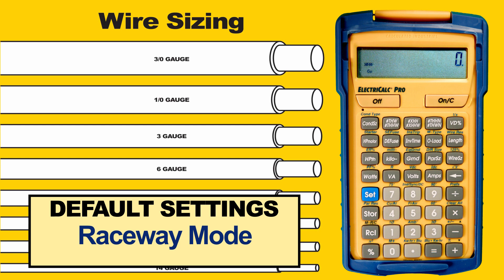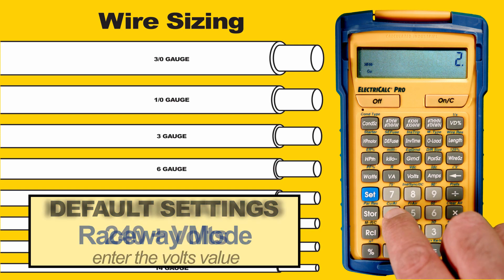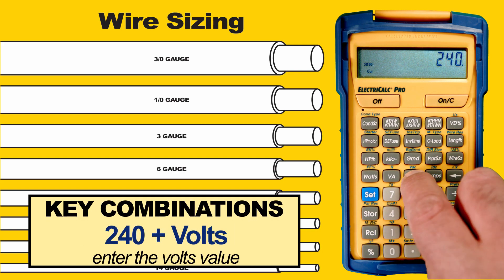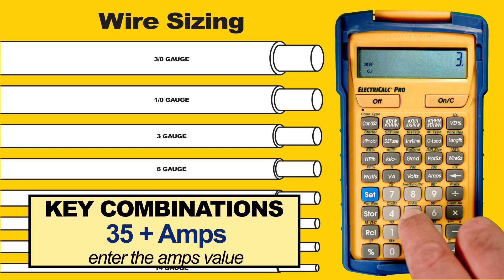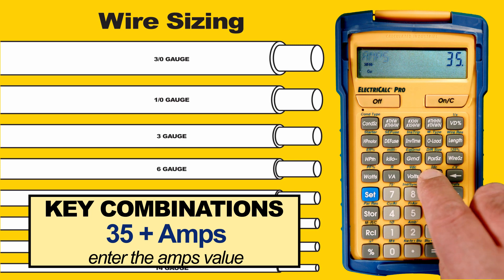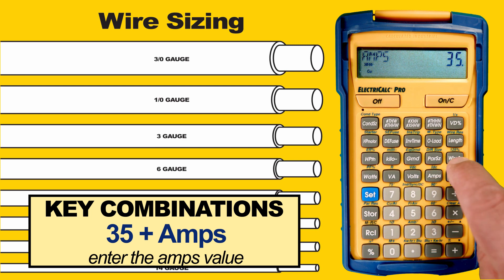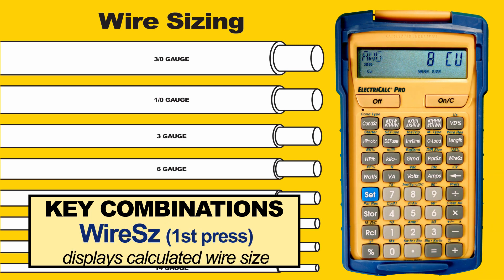Now let's enter some volts and amps and do some wire sizing. In our example we have 240 volts and 35 amps, so we enter 240 and press the Volts button, then 35 and press the Amps button. Now we just need to press the Wire Size key.